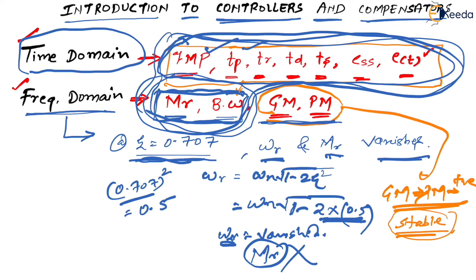Now, by some means, if I am able to alter or make changes in these parameters — MP, Tp, Tr, Td, Ts, ESS, E of T, that is the complete set of time domain parameters — along with GM and PM, if I am able to alter them, then I can definitely get the best possible response.